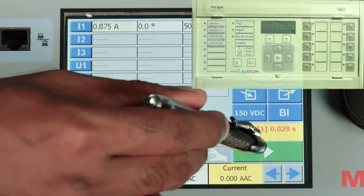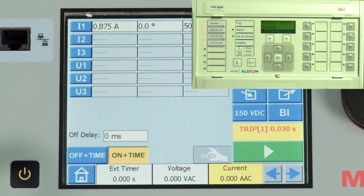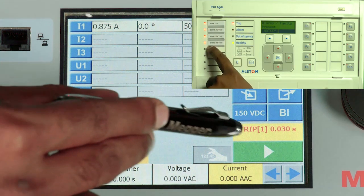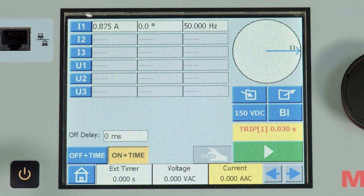By pressing the play button, we can observe that the relay has tripped in the differential. The timing is 0.030, so 30 milliseconds is the trip time.